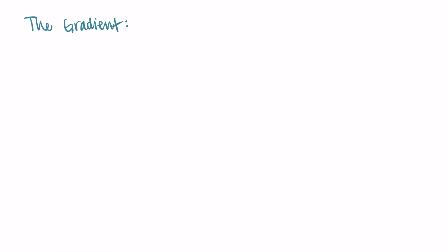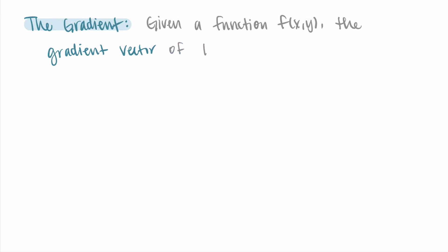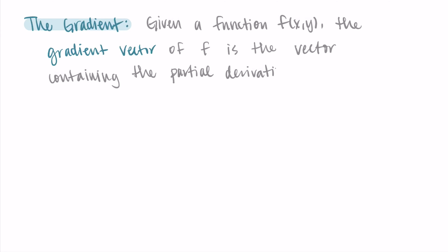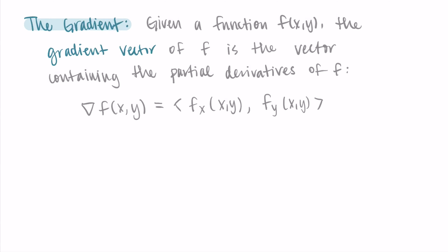Welcome back. In this video I'm going to introduce the gradient vector and do an example with it. If we are given a function f of xy — with independent input variables x and y — the gradient vector of f is a specific vector that contains the partial derivatives of our function. We use this upside-down triangle, and we say this equals the partial derivative of f with respect to x in the first component and the partial derivative with respect to y in the second component.